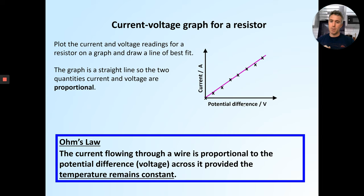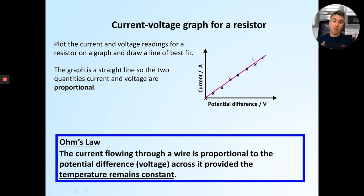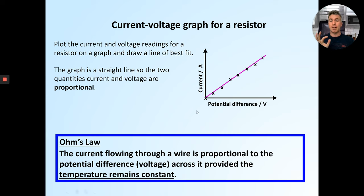This ends up being a science law — Ohm's law, named after George Ohm. He noticed that the current flowing through a wire is proportional to the potential difference across it, provided the temperature remains constant. If the temperature isn't constant, Ohm's law doesn't fit. So if you see a graph of potential difference vs. current that's a straight line, you know it obeys Ohm's law. If it's not a straight line, it doesn't. I suggest you pause the video, sketch the graph, and make that note.